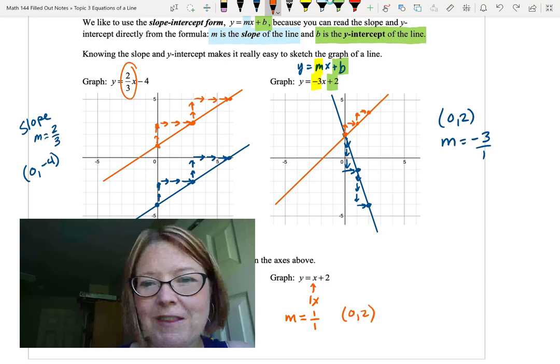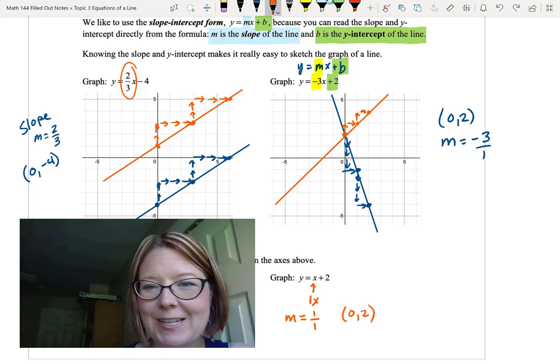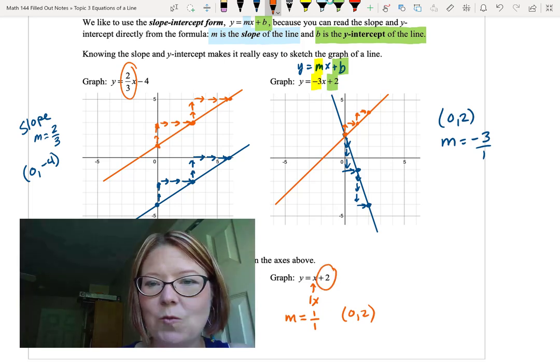What we do share for the graphs of y equals negative 3x plus 2 and y equals x plus 2 is a y-intercept of positive 2 on both graphs.